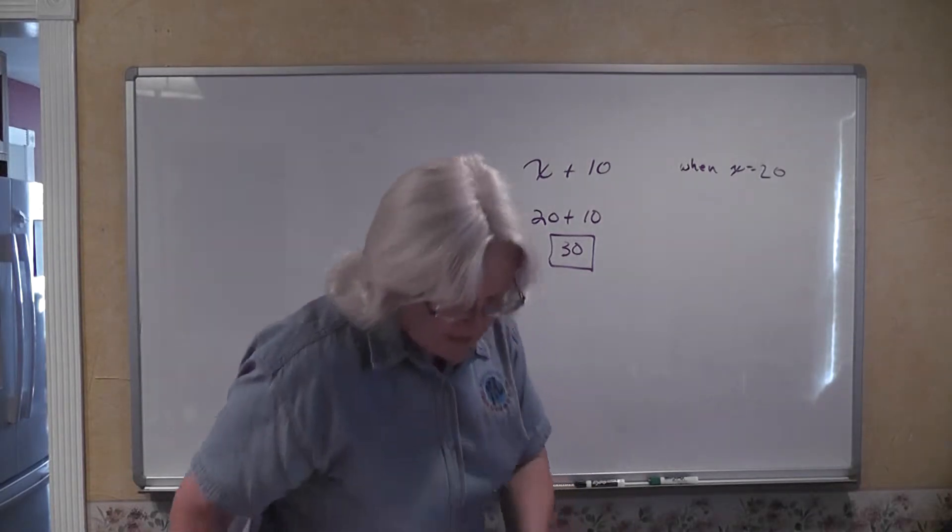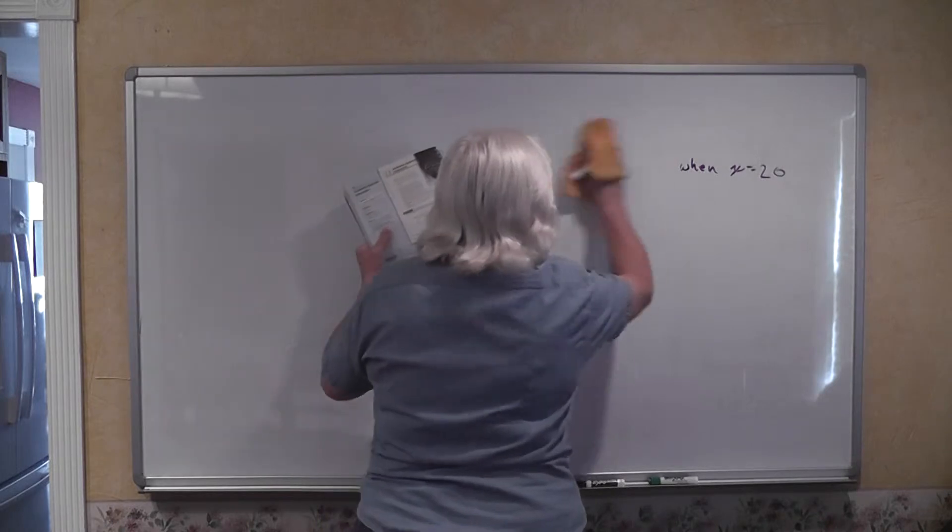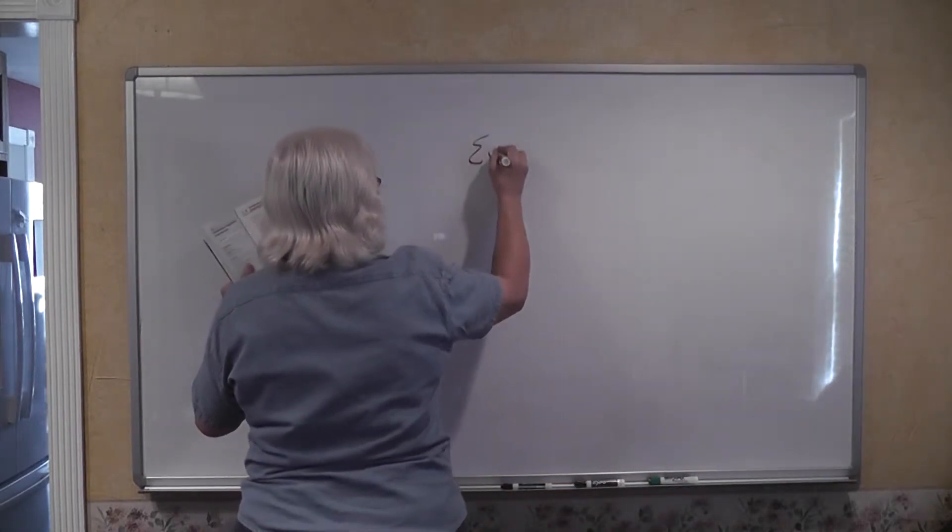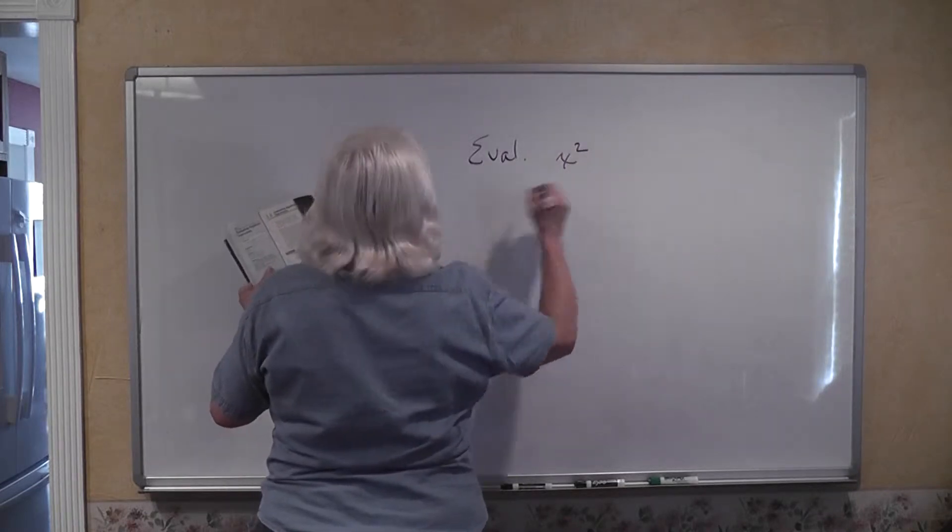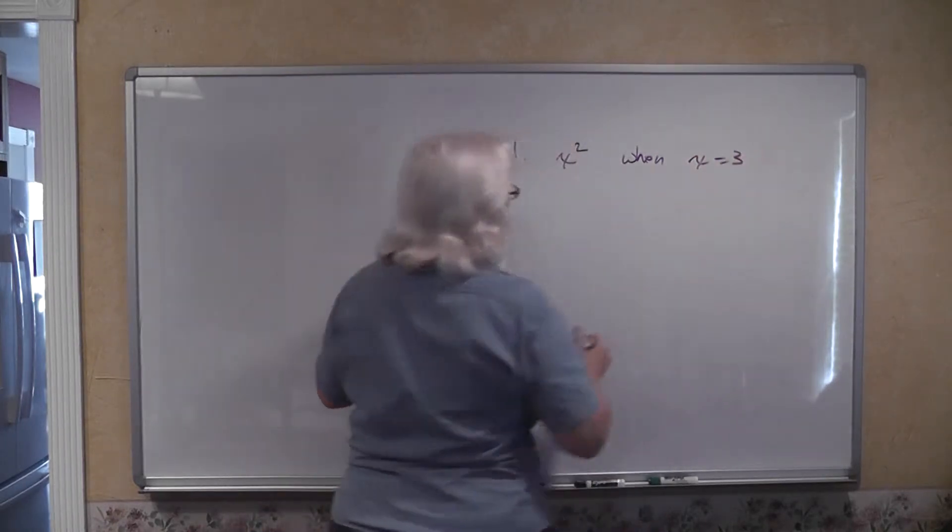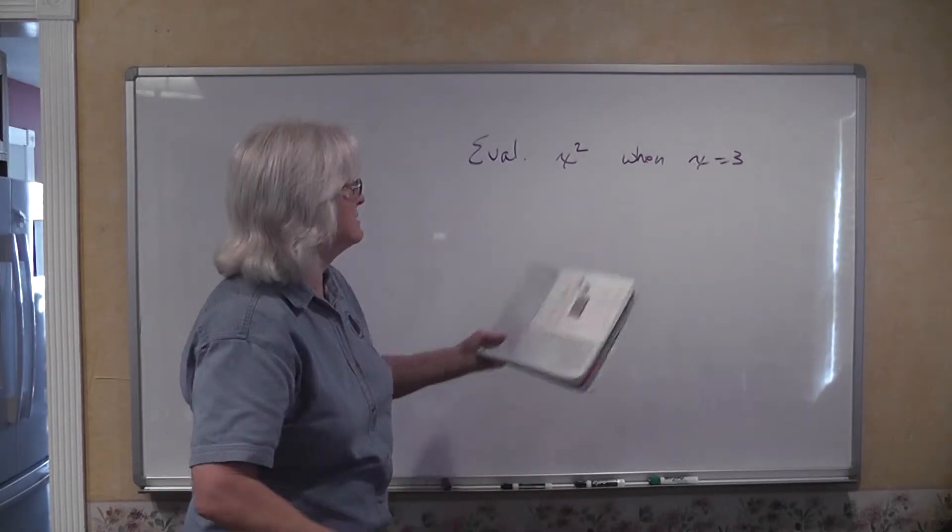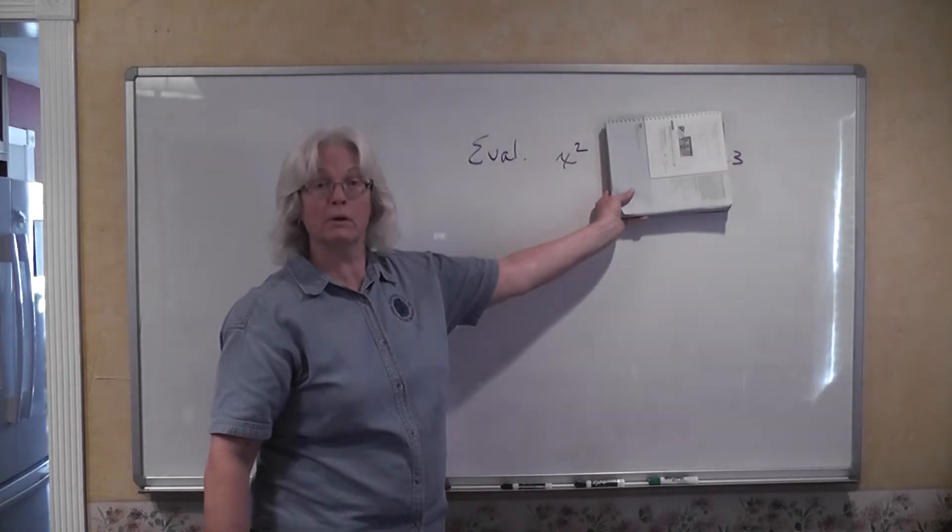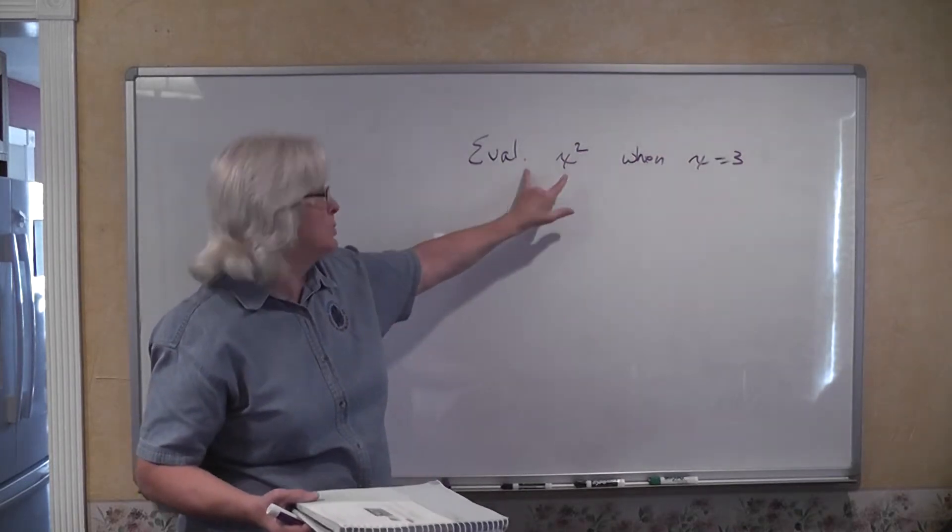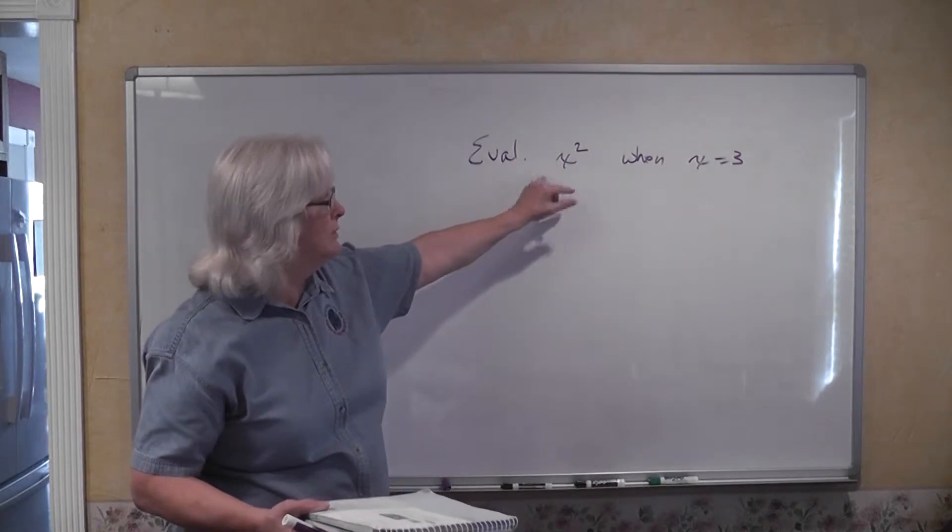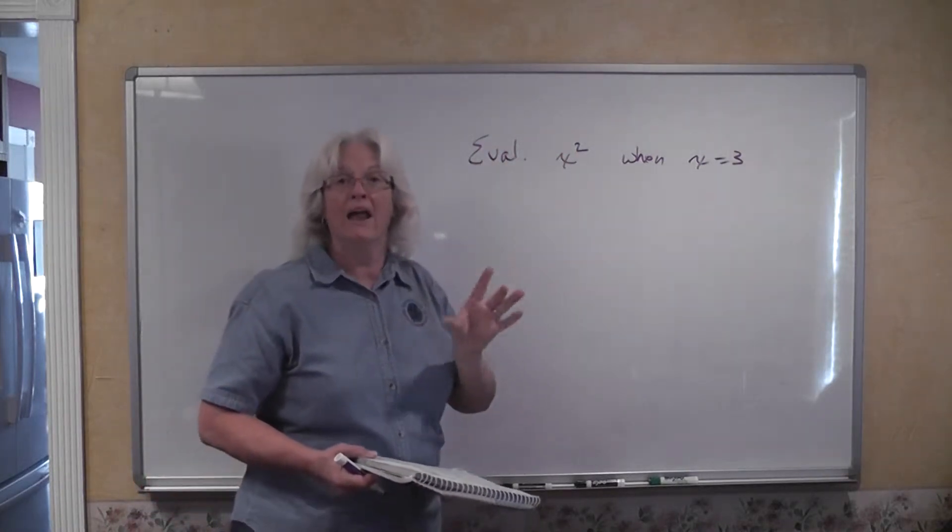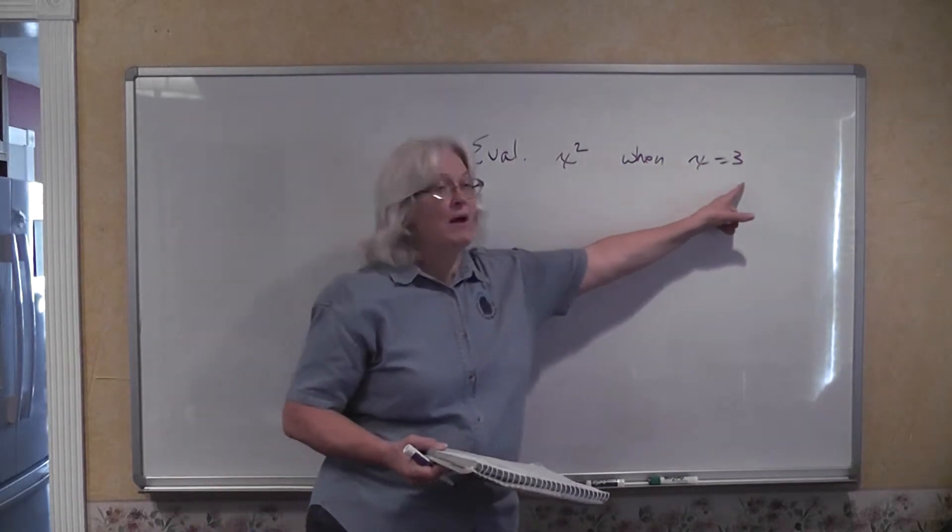For example we have example 1 on page 96 and it says evaluate x squared when x is equal to 3. If we didn't have this information, if all we had was evaluate x squared there's absolutely nothing you can do because you don't know what x could be. You can only evaluate an algebraic expression when you're given a value for that variable.